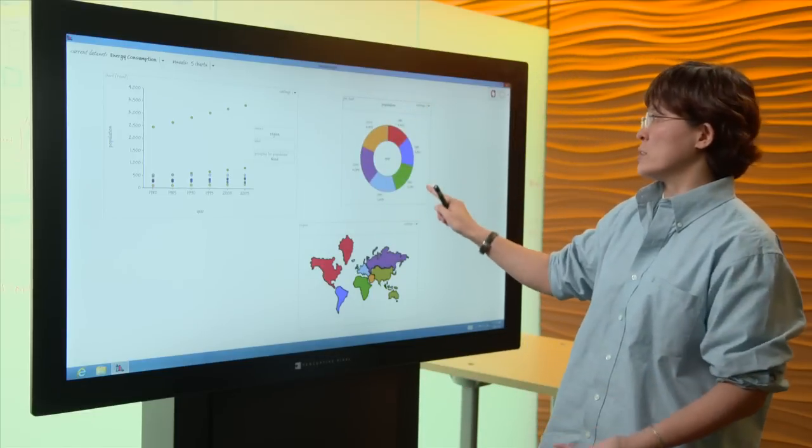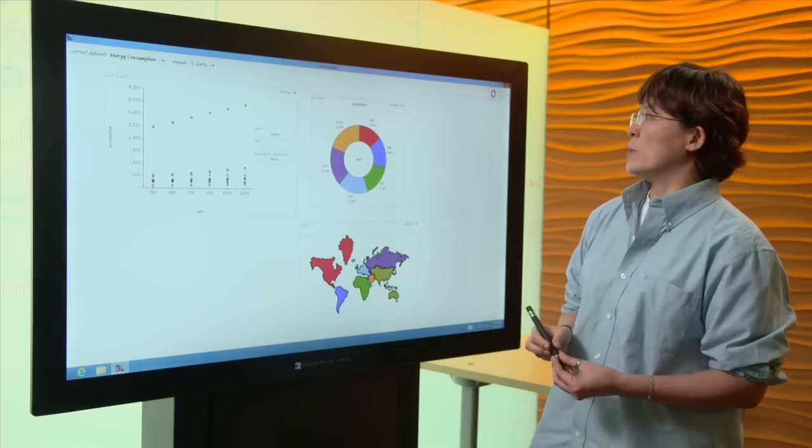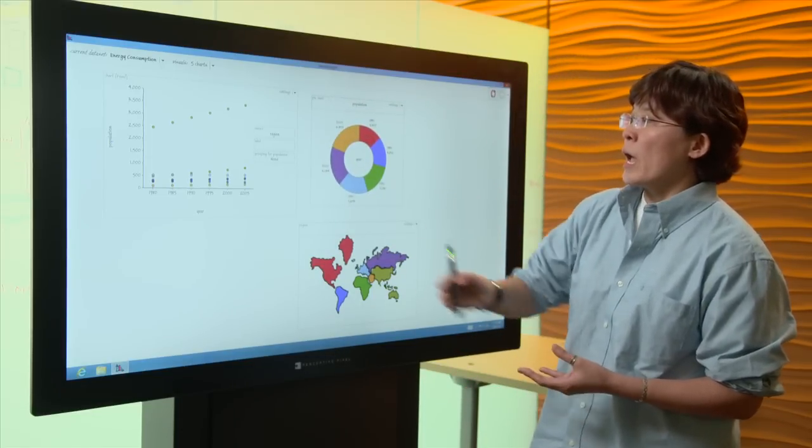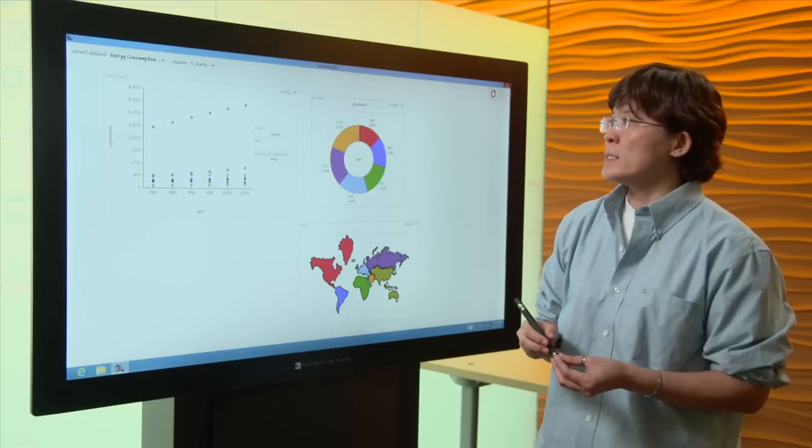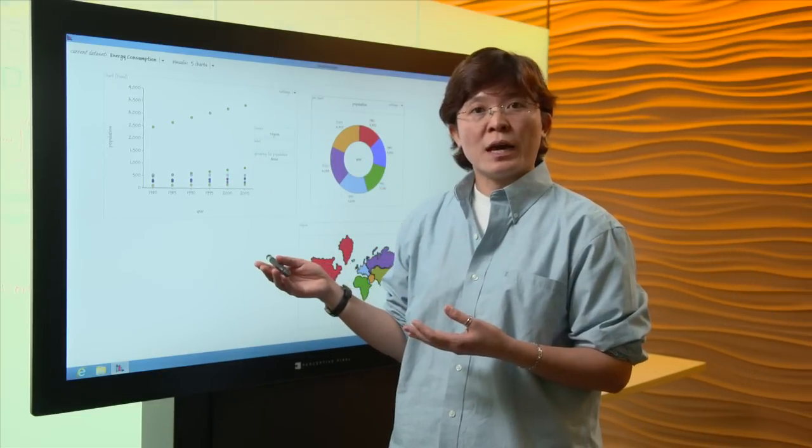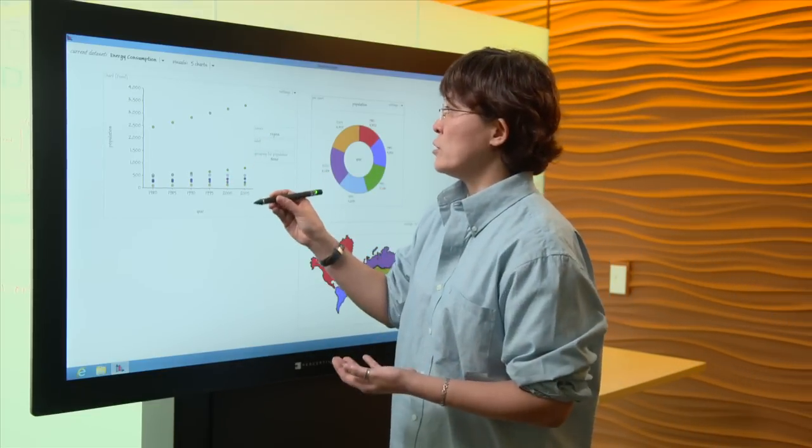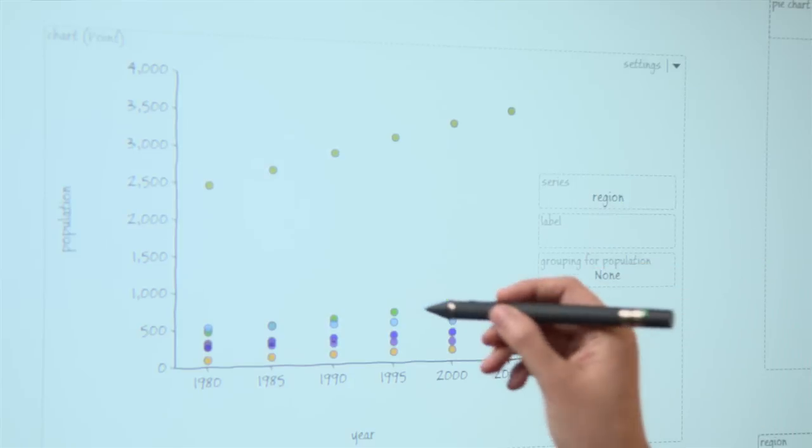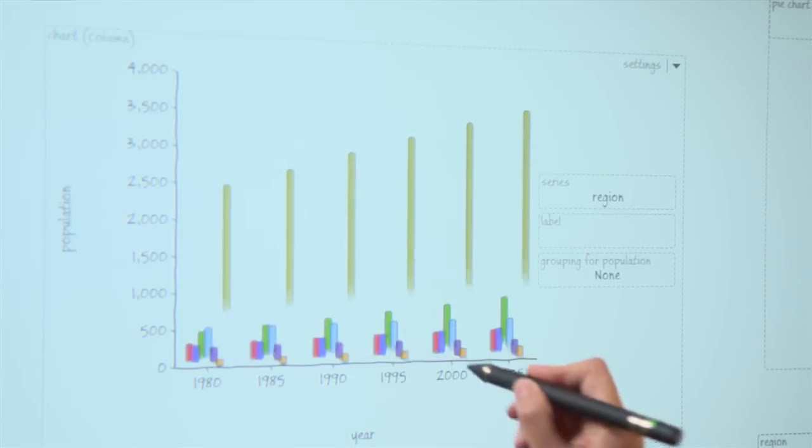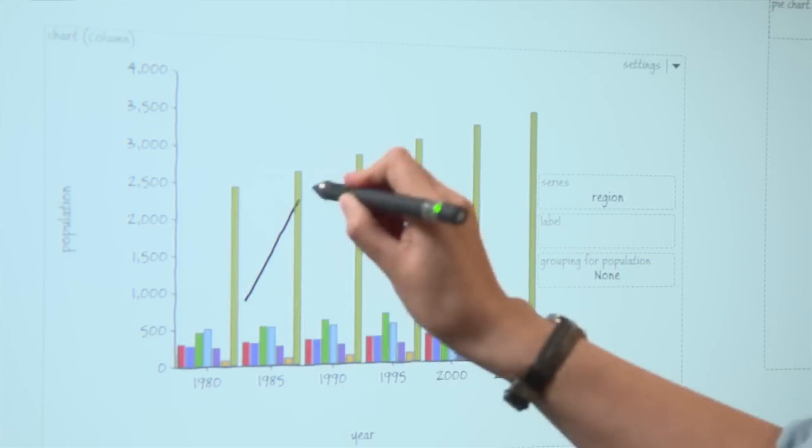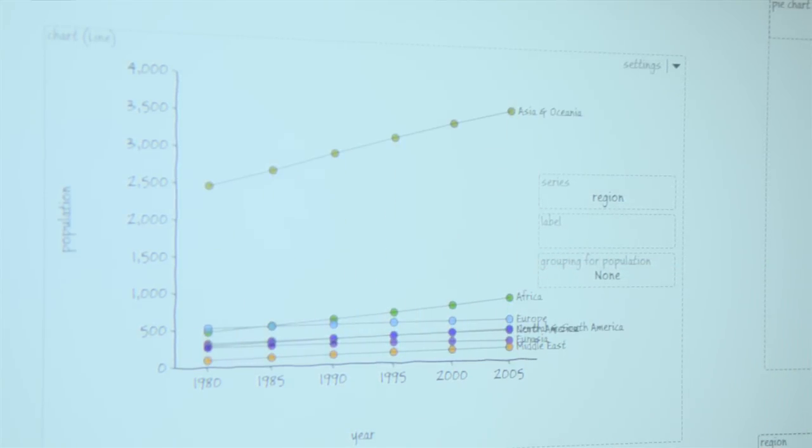The system automatically completes the chart for me. And for the chart with the X and Y axis the default is the scatter plot but I could switch to other charts by drawing the bar shape for the bar chart and the line shape for the line chart.